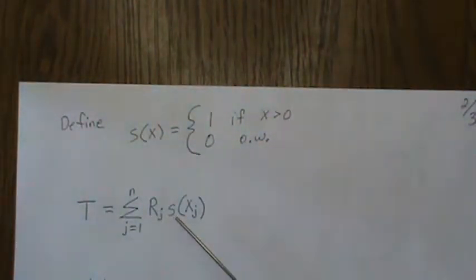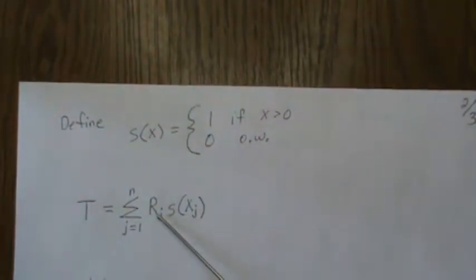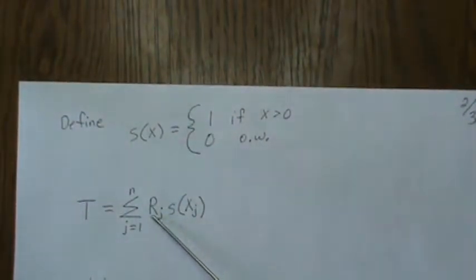These ranks, j goes from one to n, and each one of those is associated with an original x value. If the original x value is positive, then we keep the rank.